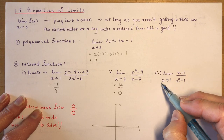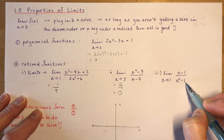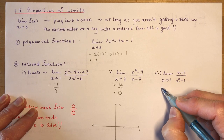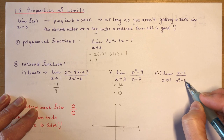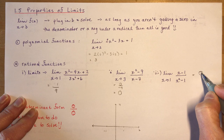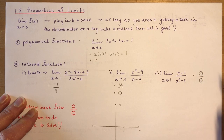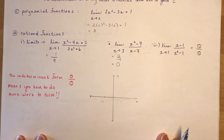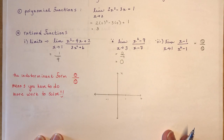However, the limit as x approaches 1 of (x minus 1) over (x squared minus 1) — if you plug in 1, you get 0 over 0. Zero over zero is a very special form called the indeterminate form. The indeterminate form says you're not finished; you have to do more calculation to solve.